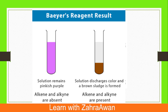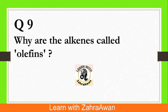The other method is Bayer's reagent test. We have dilute alkaline KMnO4 solution, which is pink in color. When we add alkenes, the pink color discharges, proving the presence of an unsaturated compound. If the color does not discharge, it indicates a saturated compound. This is the identification method for alkanes and alkenes.